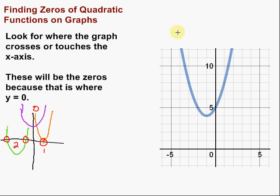So in this case, we don't have any zeros. There's no zeros, because there's no place where that graph is going to cross the x-axis, or touch the x-axis. So no real zeros.